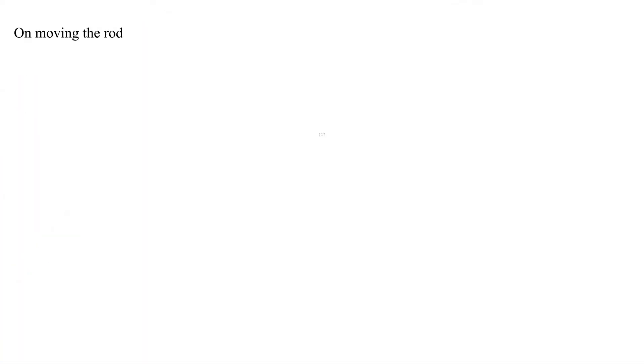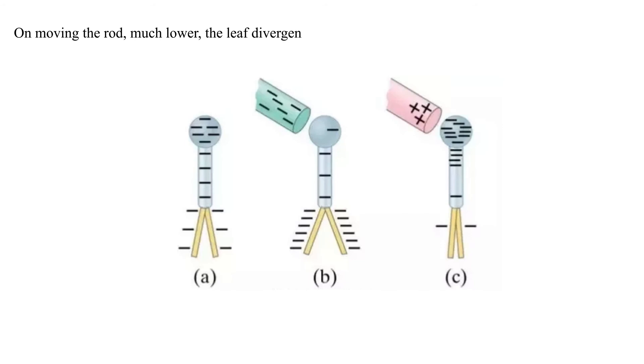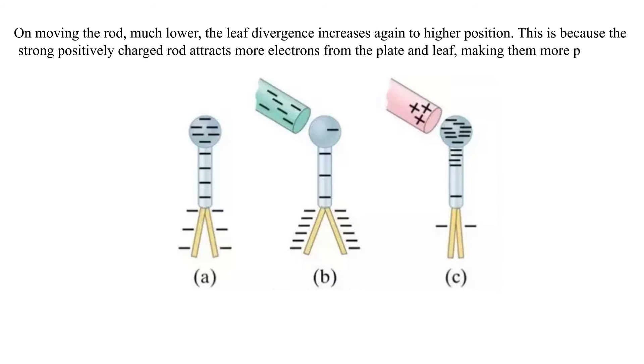On moving the rod much lower, the leaf divergence increases again to higher position. This is because the strong positively charged rod attracts more electrons from the plate and leaf, making them more positive. Hence, they repel further.